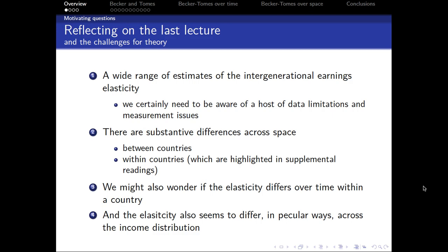The elasticity seems to differ in peculiar ways across the income distribution. The intergenerational degree of income mobility is different for lower, middle, and upper income families. Today we'll look to theory to help guide us through that and offer some predictions. Also keep in mind the early lectures where I primed you with an overall framework — the overlapping influence of family, market, and state. We're going to give more precision to that notion in this lecture.